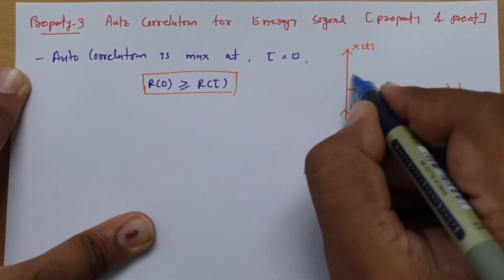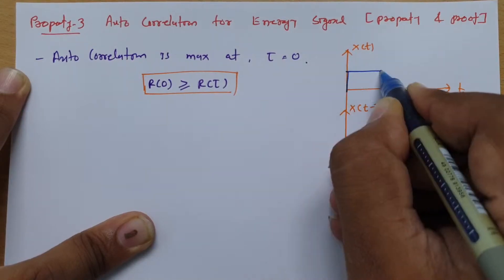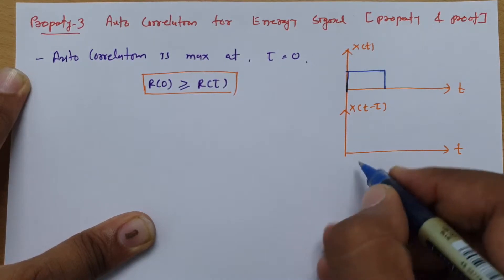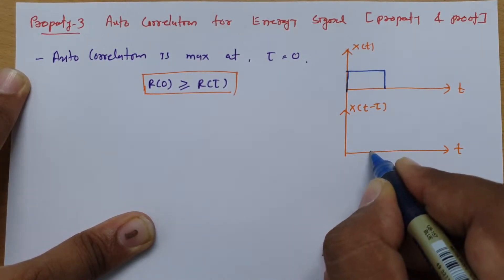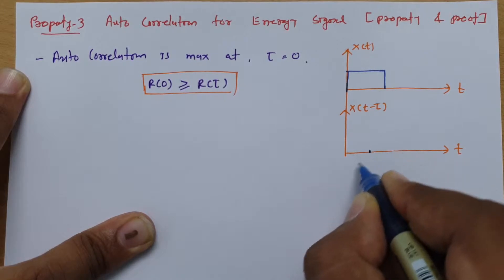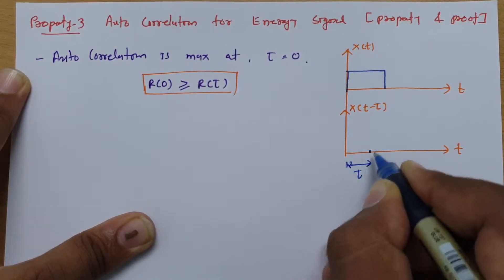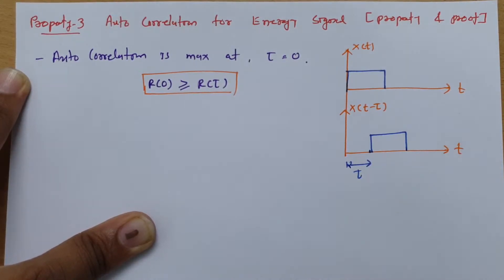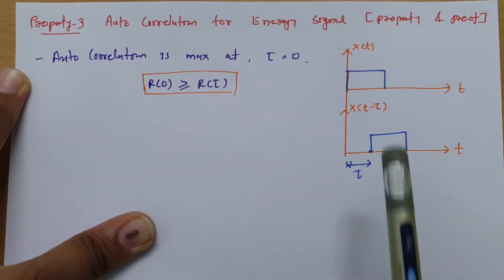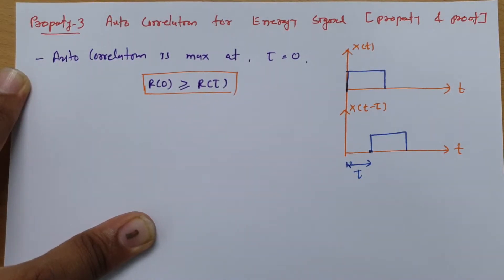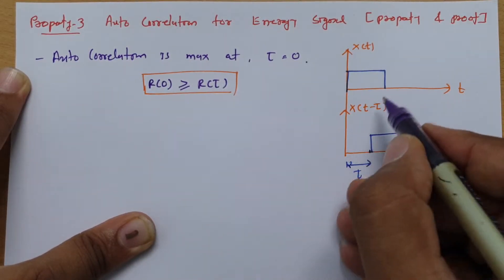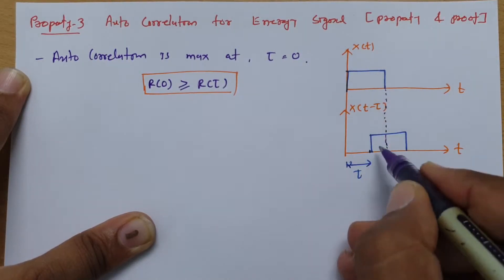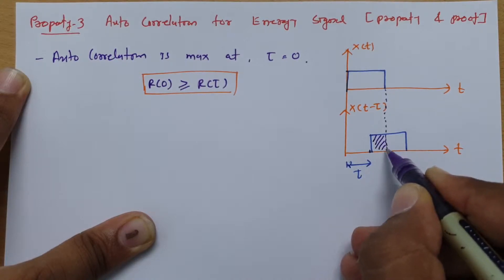For example, if x(t) is a pulse starting from some point, then x(t − 2) will be a shifted version of it, starting after a delay of two. If I draw the trajectory of these two signals, you can see that their similarity exists only in the overlapping zone.